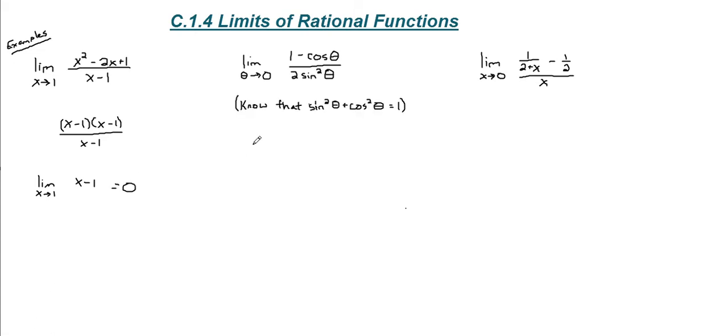Okay, on our next one, we're doing the limit as theta approaches 0. We have 1 minus cosine theta over 2 sine squared of theta. In order to simplify this, because obviously plugging 0 for theta makes the denominator 0, we need to know the trig identity, sine squared plus cosine squared equals 1. We can actually substitute sine squared with the quantity 1 minus cosine squared.